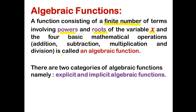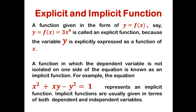There are two categories of algebraic functions: explicit and implicit. A function given in the form y equals f of x — for example y equals 3x to the power 4 — is called an explicit function because the variable y is explicitly expressed as a function of x. A polynomial function is also a type of explicit function. On the other hand, a function in which the dependent variable is not isolated on one side of the equation is known as an implicit function. For example, the equation x squared plus xy minus y squared equals 1 represents an implicit function, usually given in terms of both dependent and independent variables.